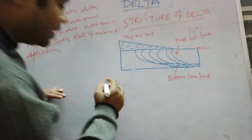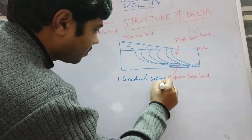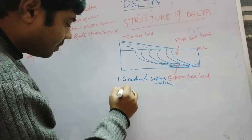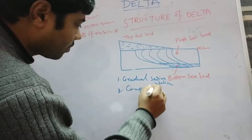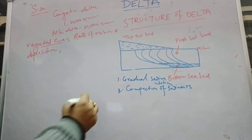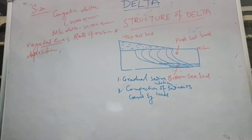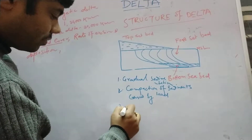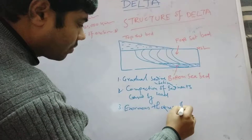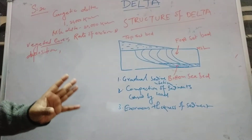These deltas undergo subsidence because of the gradual sedimentation and consequent increase in the weight of the delta material, compaction of sediments caused by the load of sediment, and the enormous thickness of the sediments, which causes isostatic adjustment.